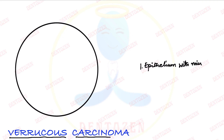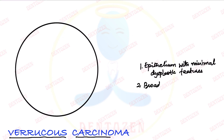Because this epithelium is growing outwards as well as inwards, the rete ridges become broad. There is a specific shape of rete ridges which is called broad or elephant foot rete ridges. That is a very important point about the histopath of verrucous carcinoma.